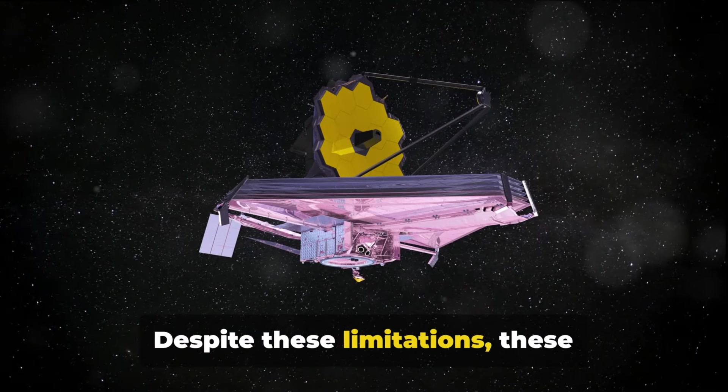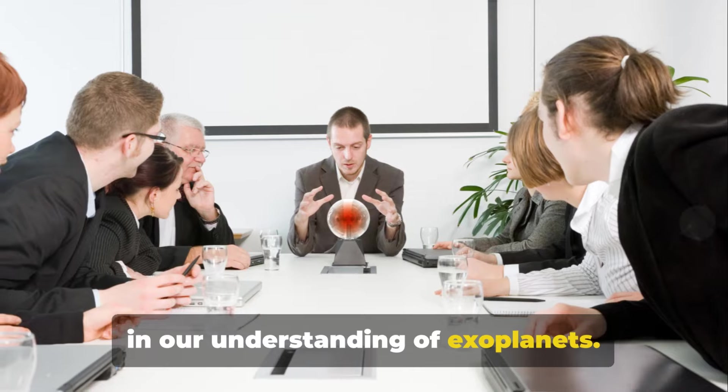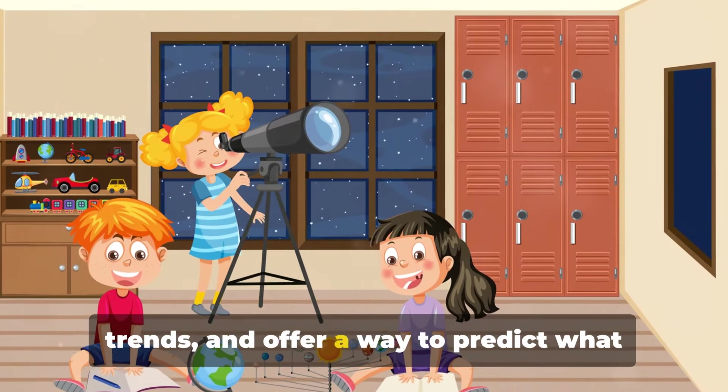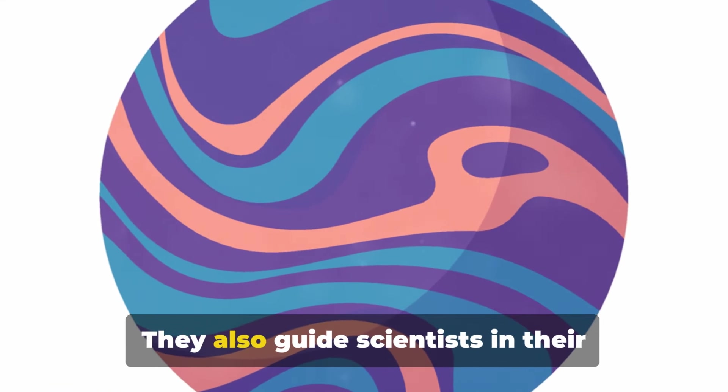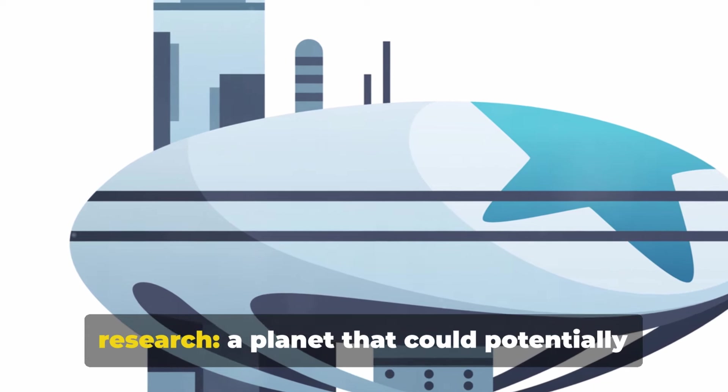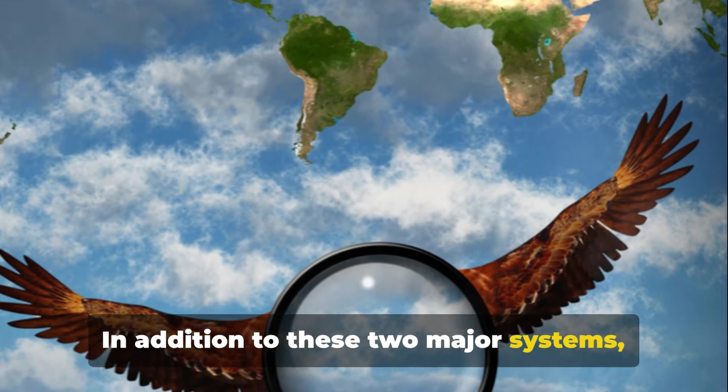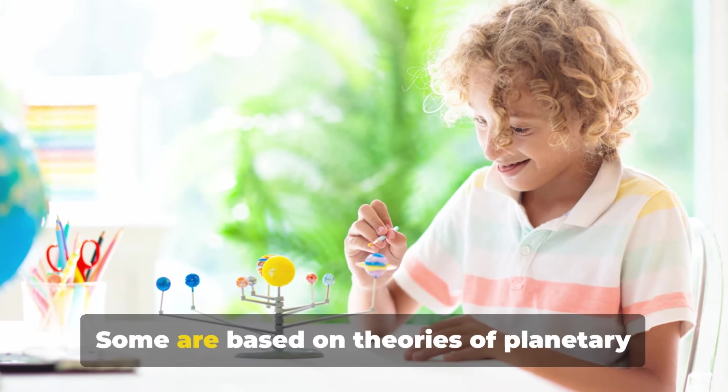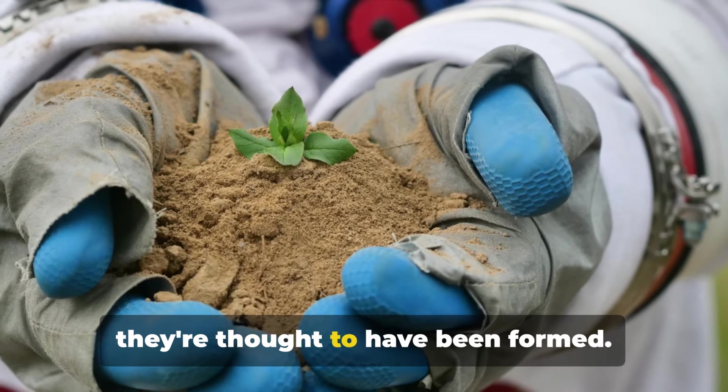Despite these limitations, these classification systems play a crucial role in our understanding of exoplanets. They help us identify patterns and trends and offer a way to predict what undiscovered planets might be like. They also guide scientists in their search for the holy grail of exoplanet research, a planet that could potentially harbor life. In addition to these two major systems, there are also alternative classification schemes. Some are based on theories of planetary formation, categorizing planets by the way they're thought to have been formed.